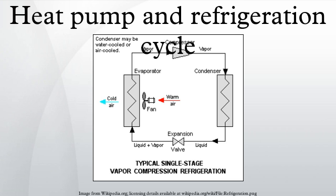a circulating refrigerant such as Freon enters the compressor as a vapor. The vapor is compressed at constant entropy and exits the compressor superheated.